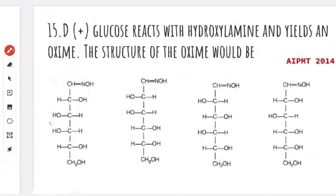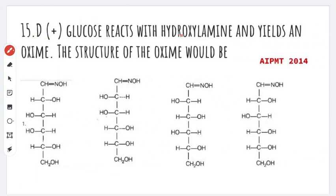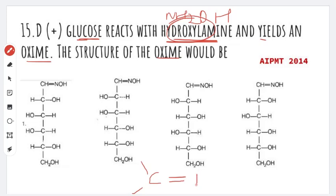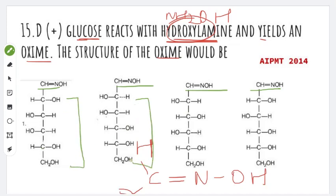Next question: D-glucose reacts with hydroxylamine and yields an oxime. Hydroxylamine reacts with glucose and produces an oxime. The general structure of an oxime has C=N-OH. The glucose reacts with hydroxylamine and the oxime structure is formed. Comparing the options, the right answer for this question is from AIPMT 2014.